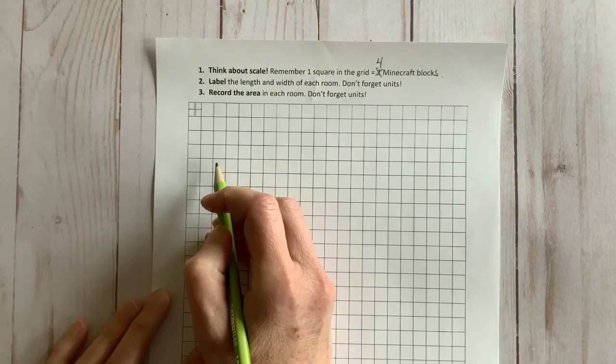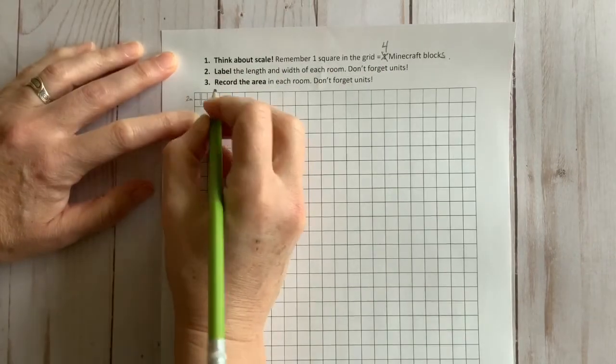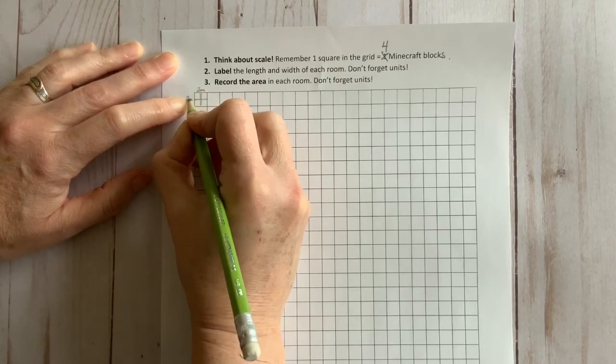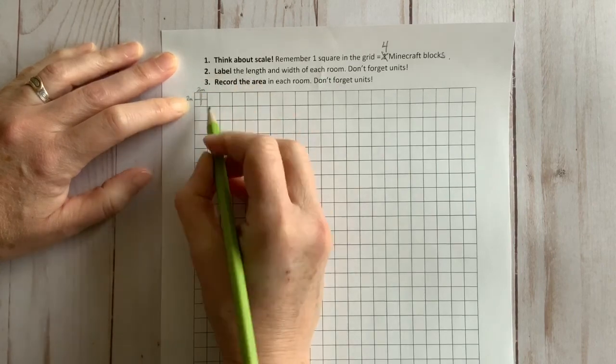You can also think of it like this. The length and width of each grid square represents two meters. Two meters by two meters equals four meters squared.